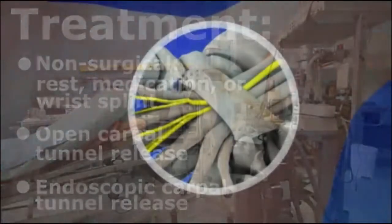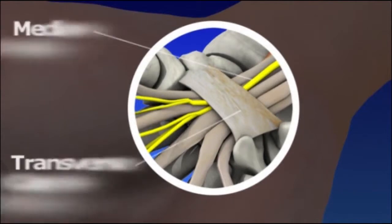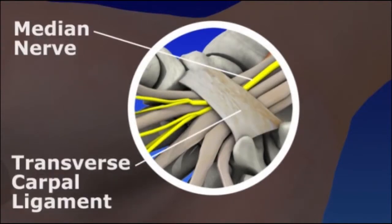All carpal tunnel releases cut the transverse carpal ligament, which forms the roof of the carpal tunnel, taking pressure off the median nerve.